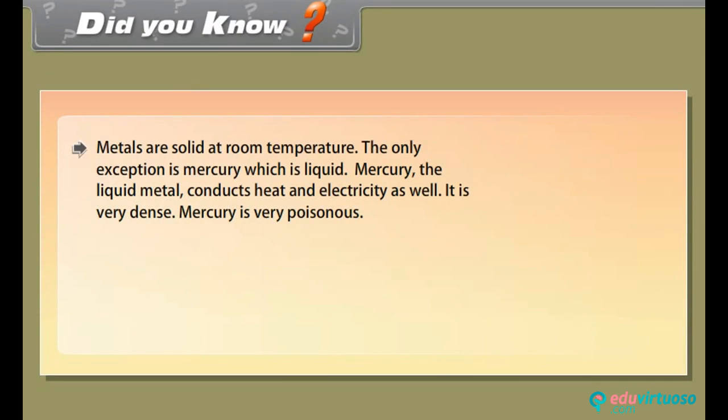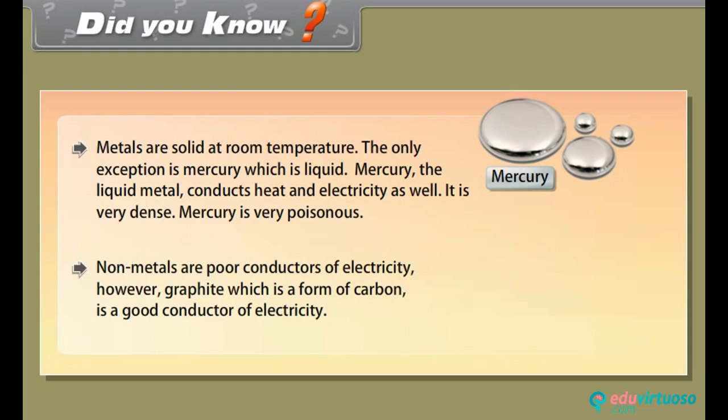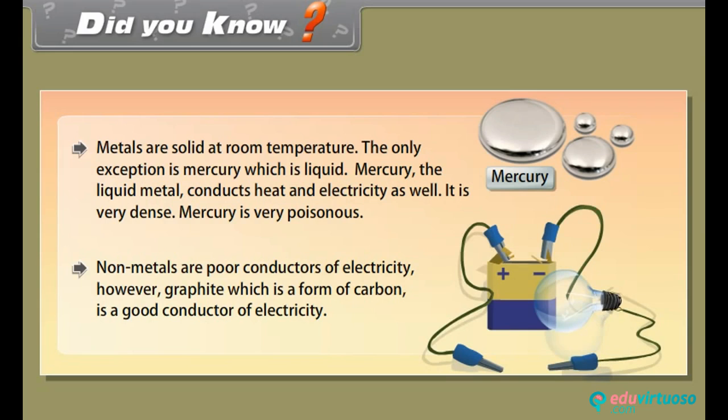Did you know? Metals are solid at room temperature. The only exception is mercury which is liquid. Mercury, the liquid metal, conducts heat and electricity as well. It is very dense. Mercury is very poisonous. Non-metals are poor conductors of electricity. However, graphite which is a form of carbon is a good conductor of electricity.